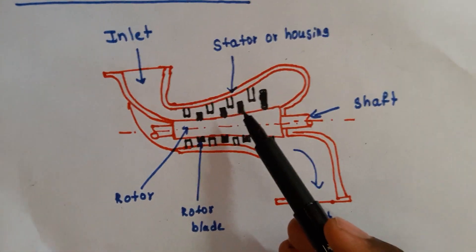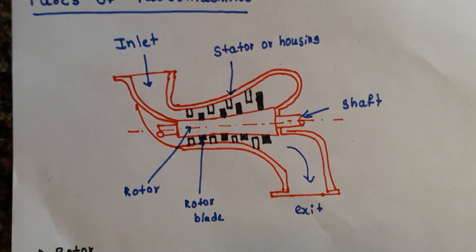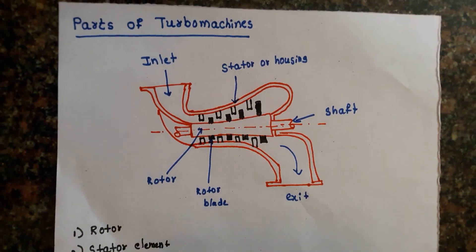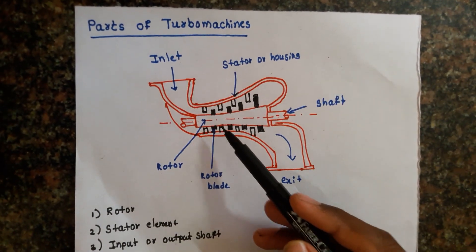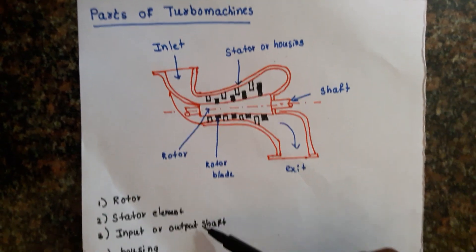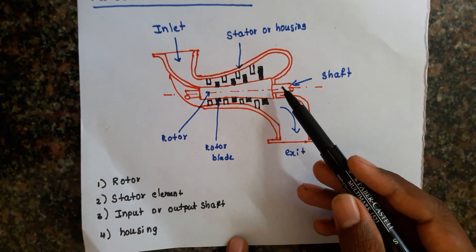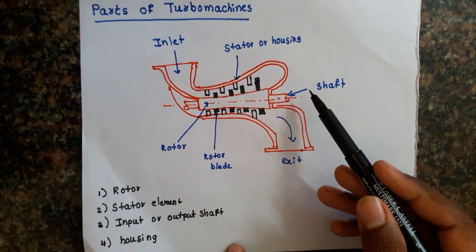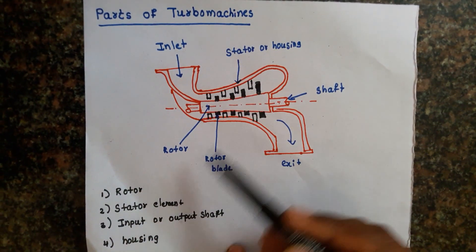Depending upon the type of turbomachine, an input or output shaft is provided. Input shaft is provided for power-absorbing turbomachines. Output shaft is provided for power-delivering turbomachines.